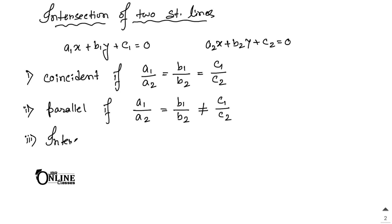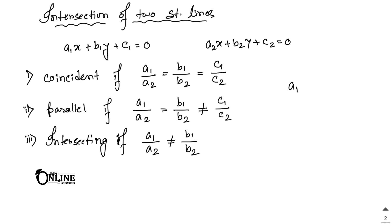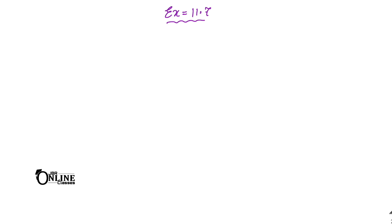For intersecting lines: a₁/a₂ ≠ b₁/b₂. And if the two straight lines are perpendicular to each other, the condition is a₁a₂ + b₁b₂ = 0.